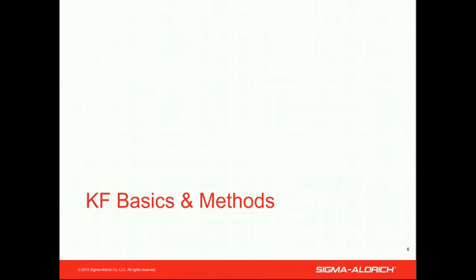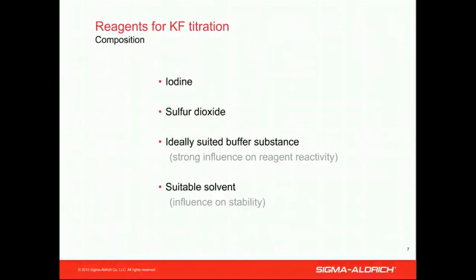Let's start with the basics of the Karl Fischer titration. I'm going to talk about the existing methods and the reagents and their composition before starting with the difficult samples. The reagents for Karl Fischer titration are composed of the substances you can see here on this slide. This was invented in 1935 by Karl Fischer, a German petrochemist who was looking for a method to determine the water content of petrochemical samples. He considered the Bunsen reaction and thought it must be possible to create a reagent and a titration method to determine that water content.